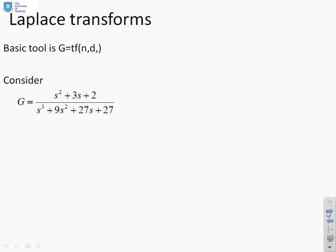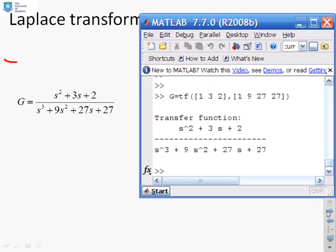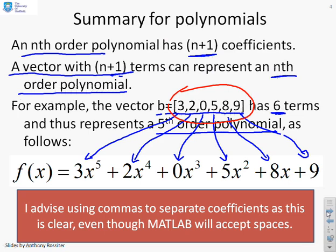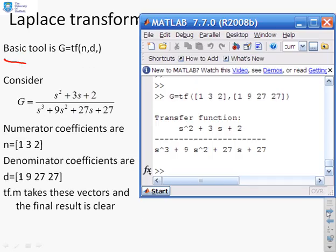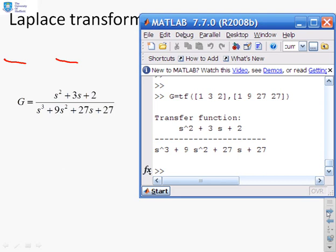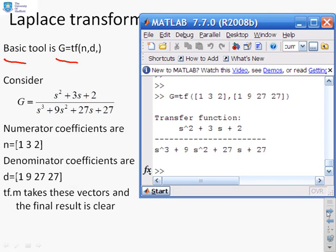Let's get on to Laplace transforms then, which is the key part of this video. Now the basic tool in MATLAB for entering transfer functions is g equals tf(n, d). So tf stands for transfer function, the first argument numerator, the second argument denominator. So you'll see I've got an example here, g equals s^2 plus 3s plus 2 divided by s^3 plus 9s^2 plus 27s plus 27.